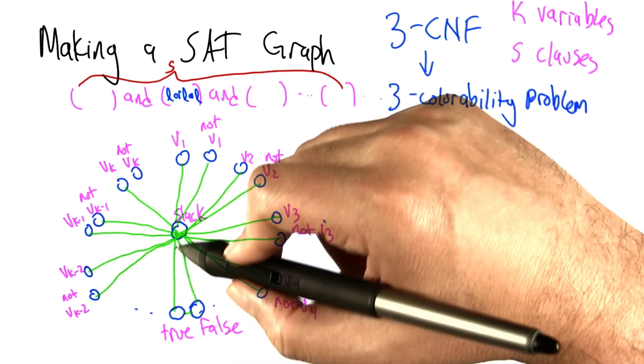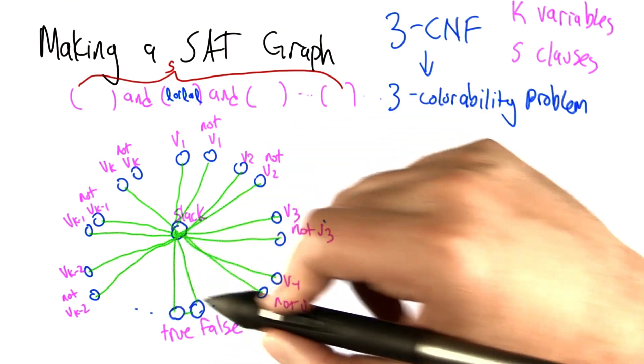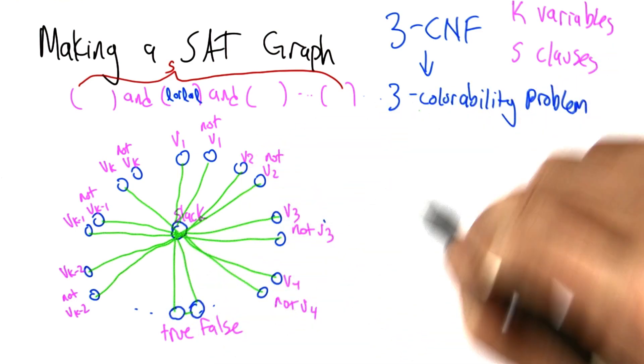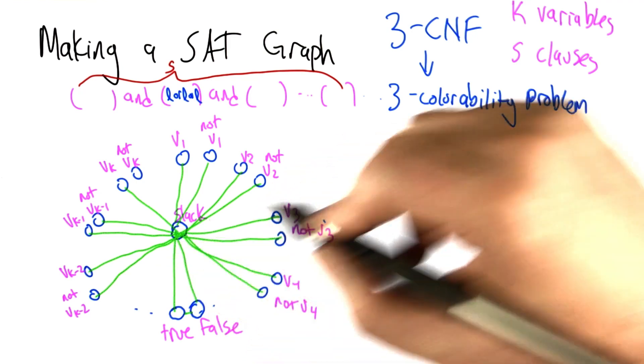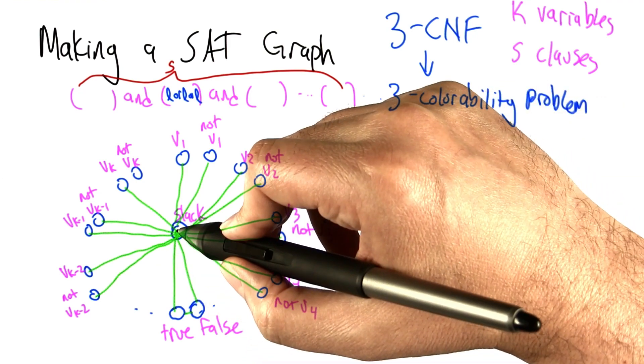What that means, because there's a little triangle here and we're trying to see whether or not it's 3-colorable, the only way that this thing could be 3-colorable is if these 3 are given 3 different colors.